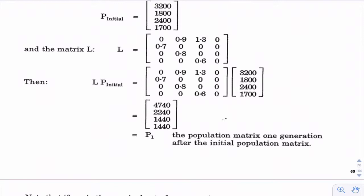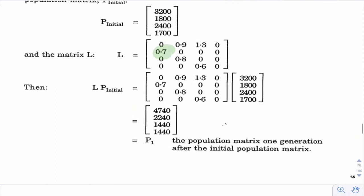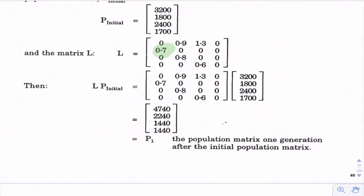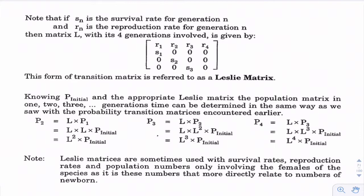The next three rows in our Leslie matrix represent our survival rates — what percentage are surviving into the next generation. We have 0.7: 70% of our juveniles survive, so 0.7 times 3,200 surviving into the next generation. You'll see how the second row starts with the survival rates and goes down in a diagonal: 0.7, 0.8, and 0.6. Everything else is 0. That matrix is called the Leslie matrix.